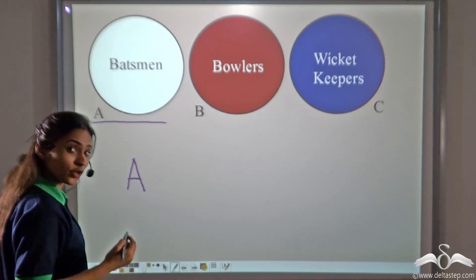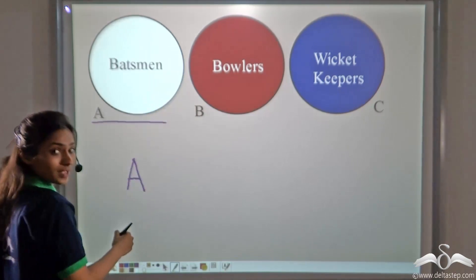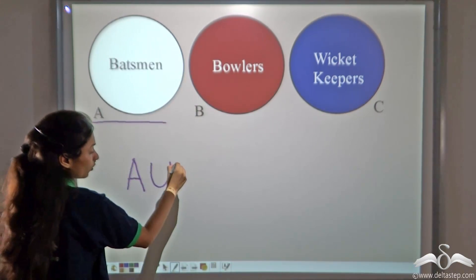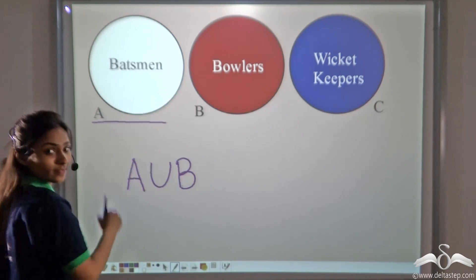Then you will need a set of bowlers for your team as well. You will add the set of bowlers with the set of batsmen you are having. Basically you are doing A union B, that is batsmen and bowlers together.